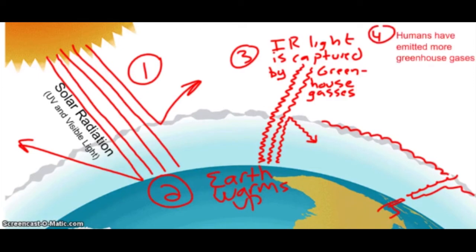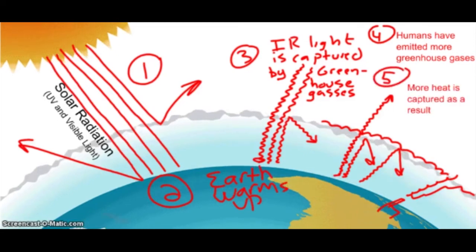And because we've emitted those greenhouse gases, that infrared light that may have escaped off into space before, well, more of it is being captured into the atmosphere and being bounced back. So instead of escaping into space, like it did over here, more is being kept to the Earth. So more heat is captured as a result.